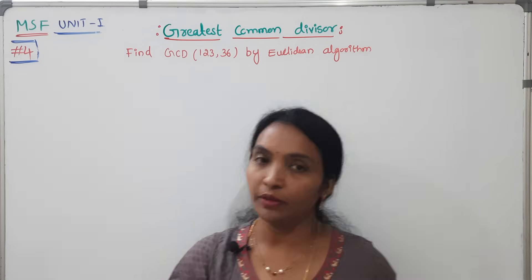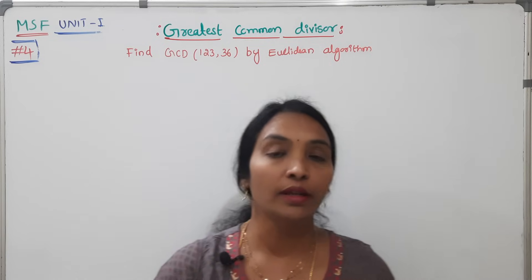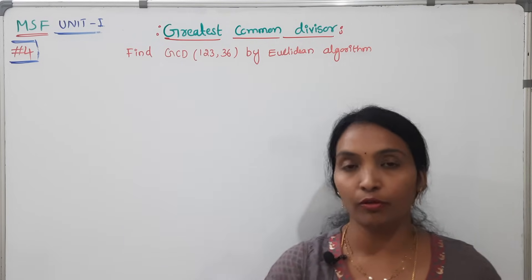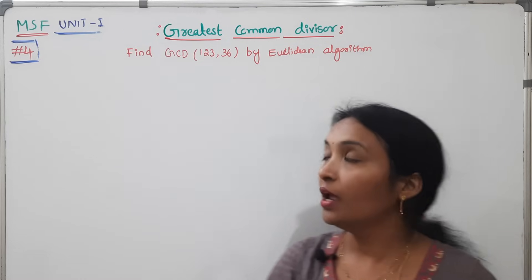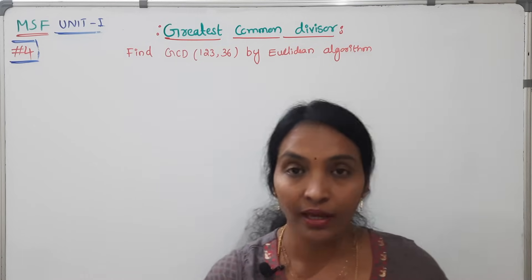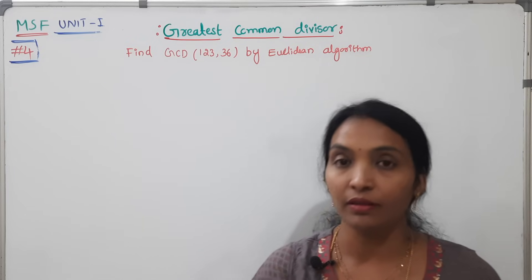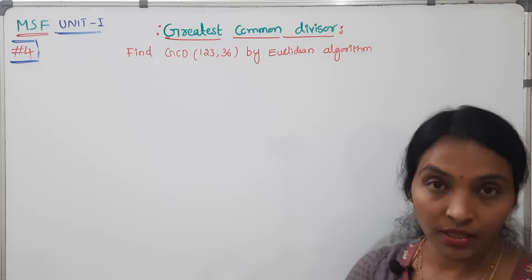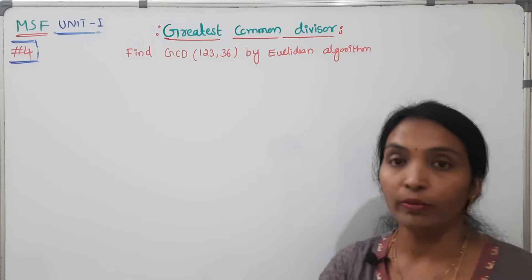Hi all of you. Welcome back to Ramareddy Maths Academy. This is the fourth lecture in our MSF Mathematical Stats and Foundation, Number Theory and Statistical Foundation, first chapter on GCD and prime factorization. What is the division algorithm? What is the Euclidean algorithm and how to find the GCD by using prime factorization method and normal method?